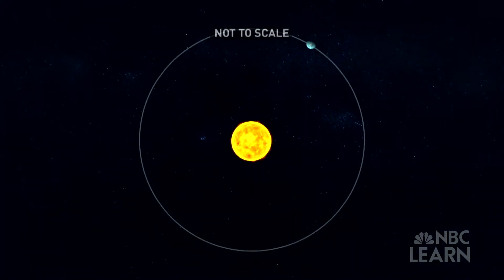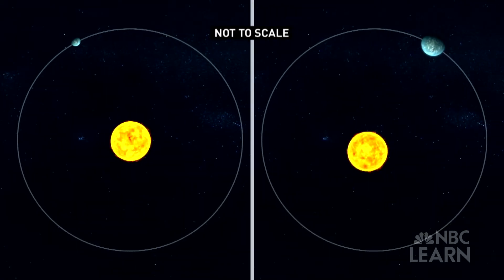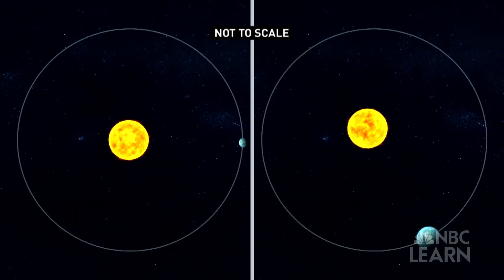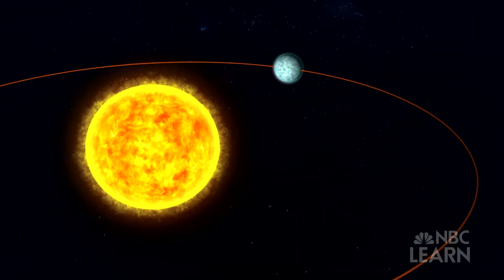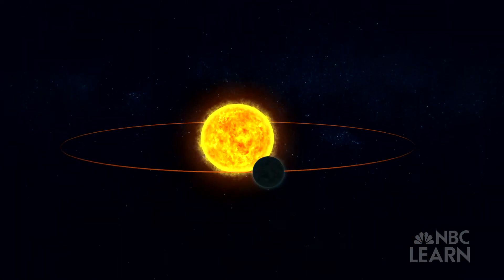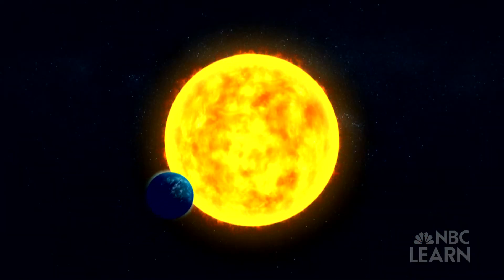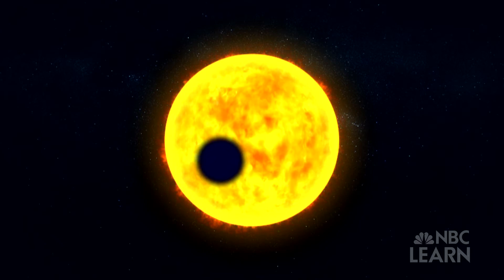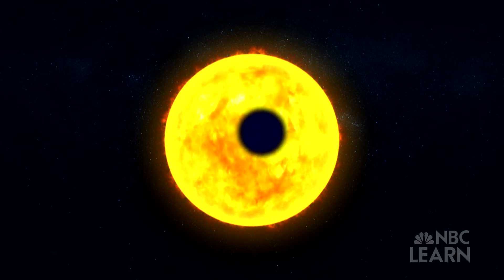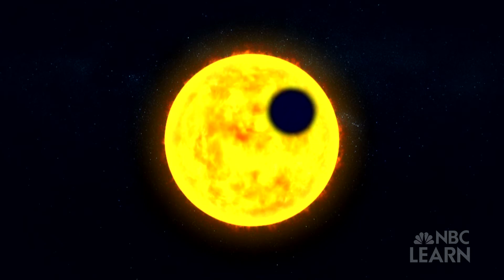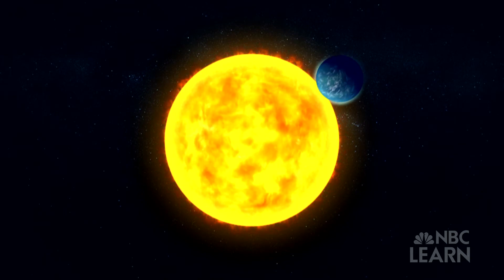Measuring the star's wobble also allows astronomers to calculate the planet's mass. The greater the wobble of the star, the greater the mass of the exoplanet. The second method used to identify exoplanets is the transit method. After observing a star over a period of time, astronomers sometimes notice a faint dimming of its light.